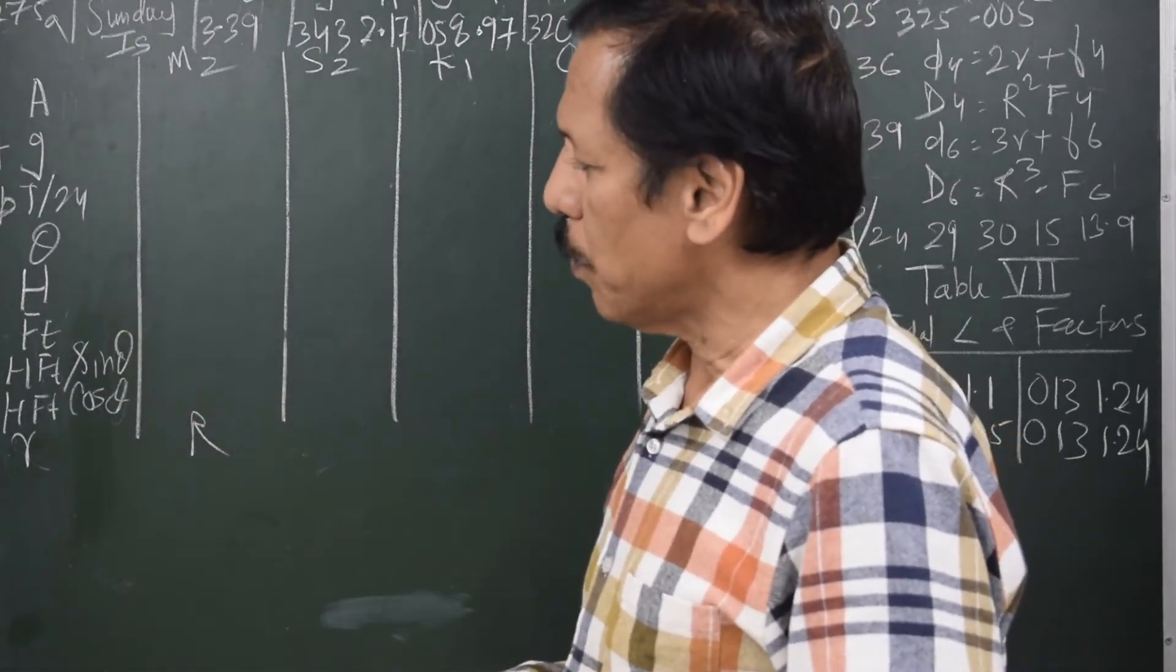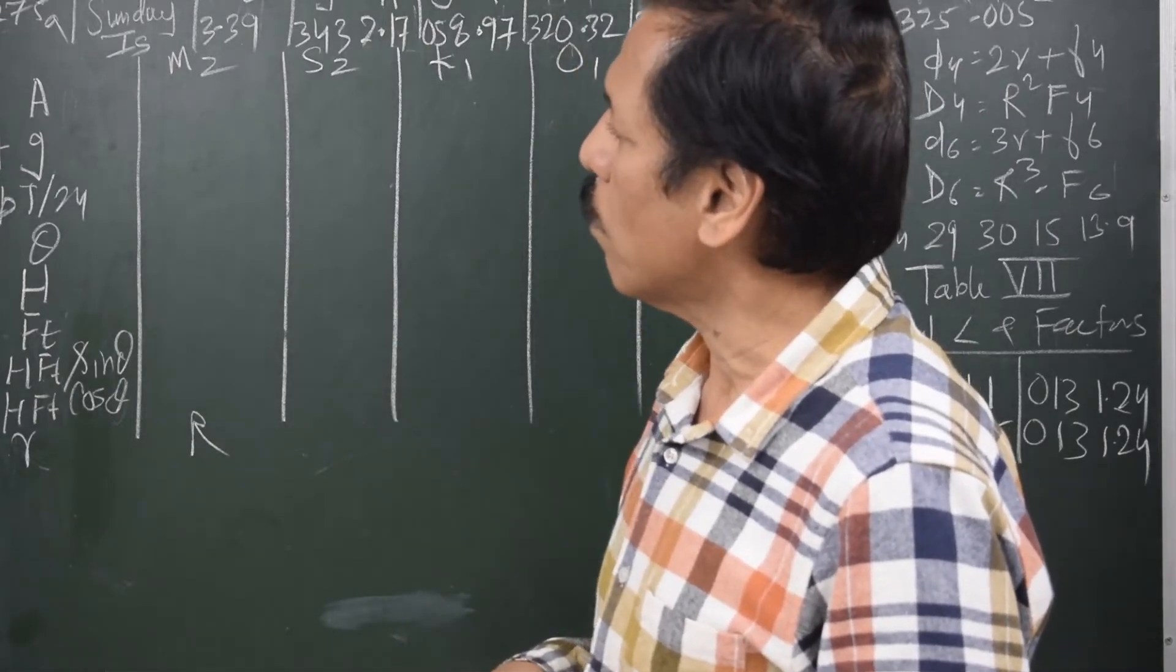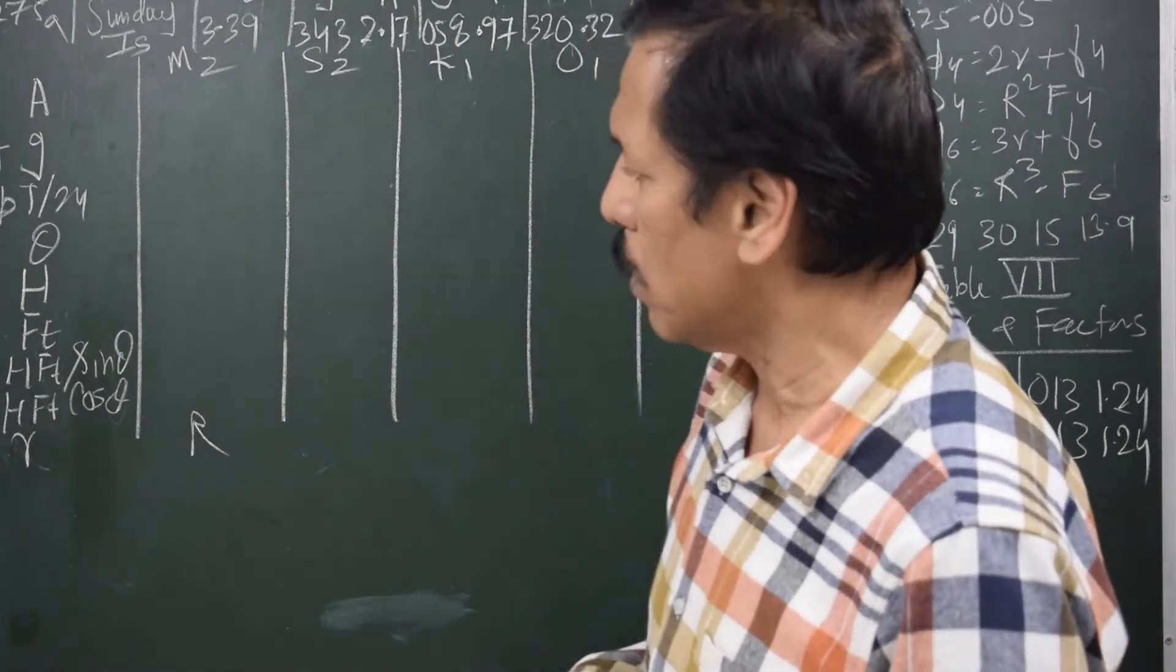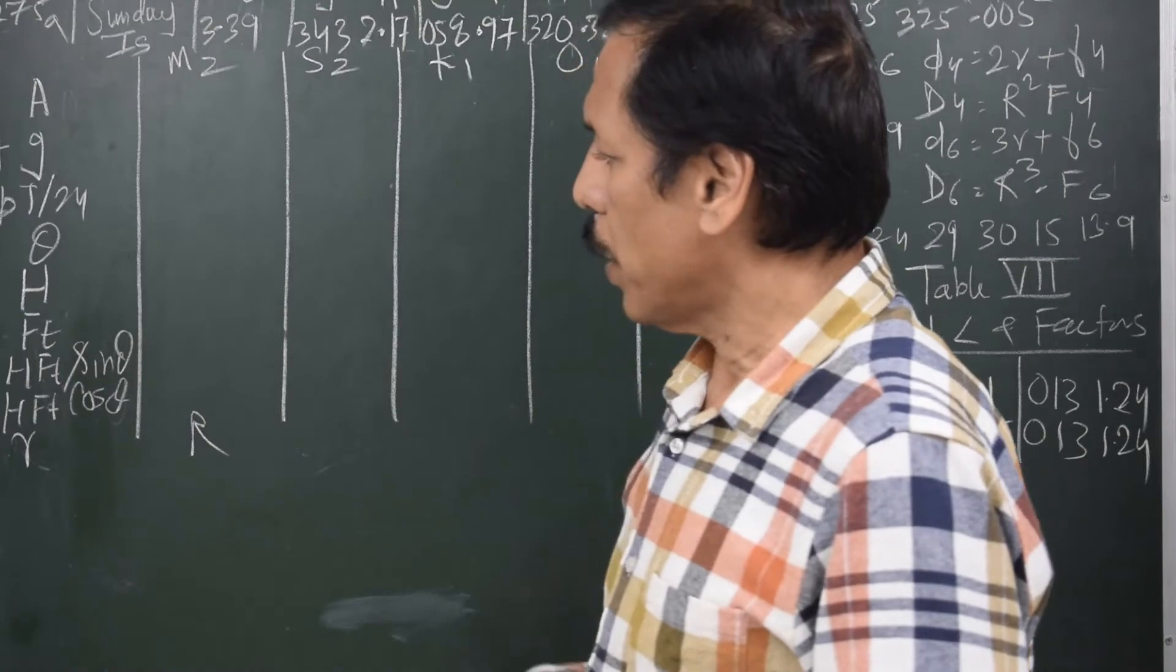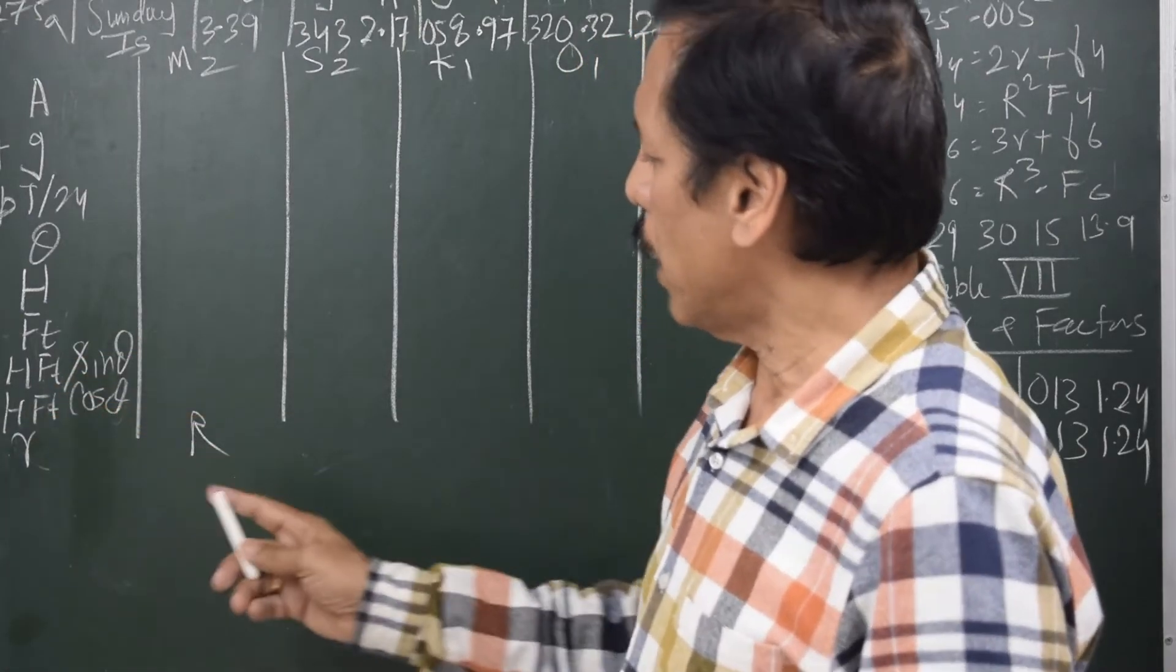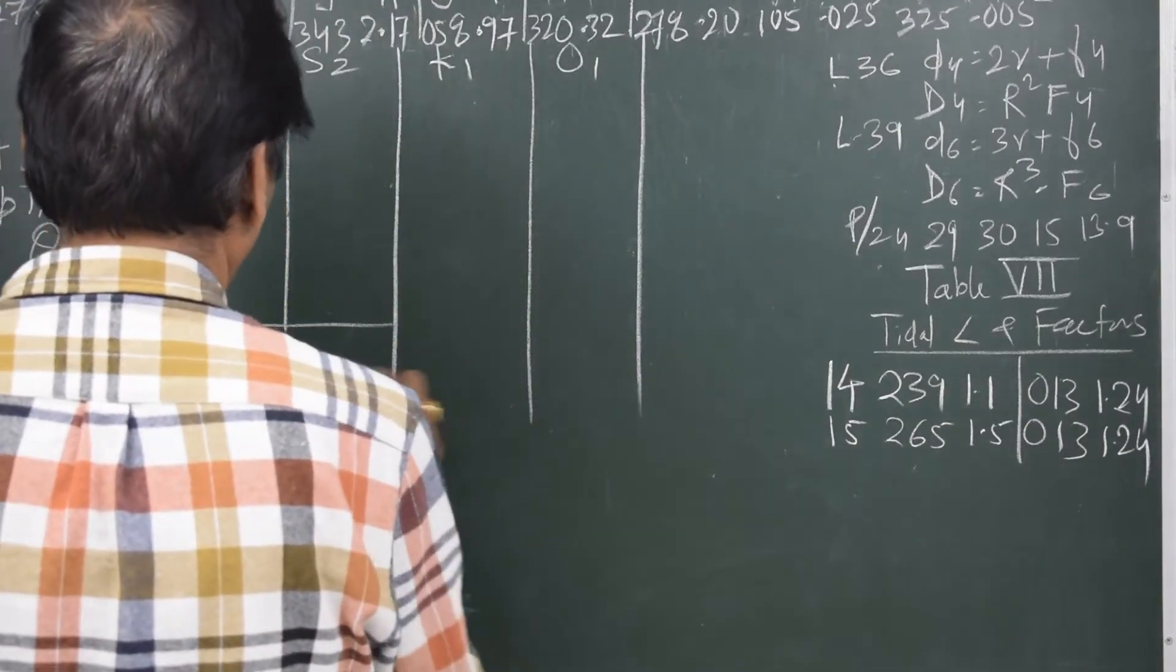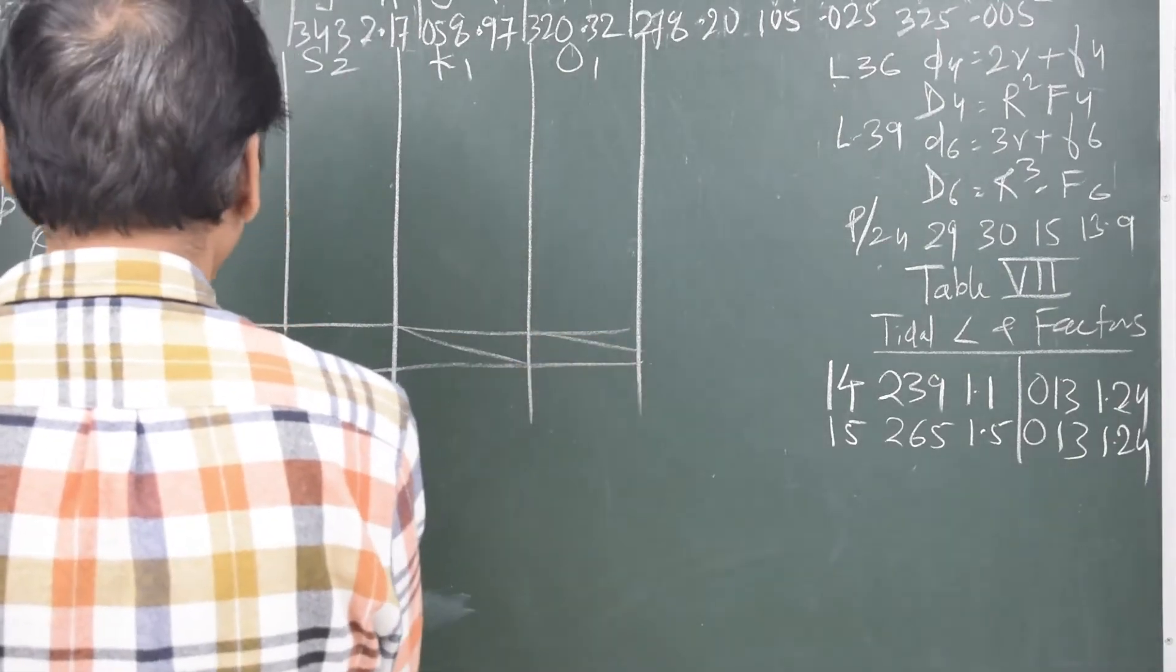h is the amplitude. ft is the factor for the time local time. We are finding out the height of tide at 0800, so ft will be the factor for 8 o'clock. hft sine theta will be written for the first two columns, we don't write anything here. And hft cos theta is written for all the four columns.